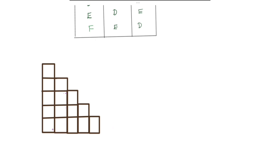The first step covers states A and B. The second step covers states A, B, C, D, E, and F. This is the last state and this is the first state. Now we will fill the table, starting with the first condition.